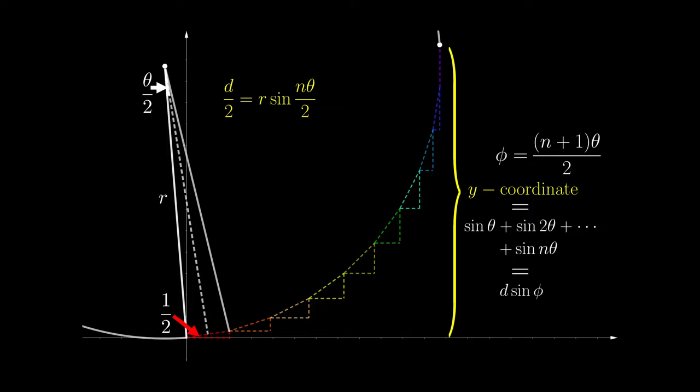Using a similar argument, replacing the length d with a colored edge, we have a similar equation. By simply dividing the first equation by the second one, we finally obtain d in terms of n and θ.